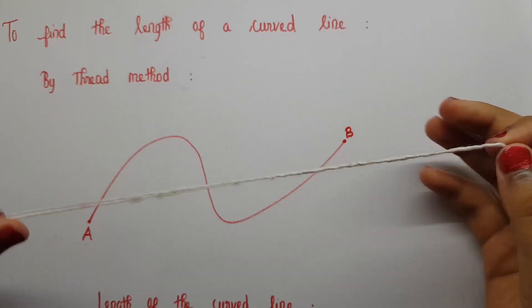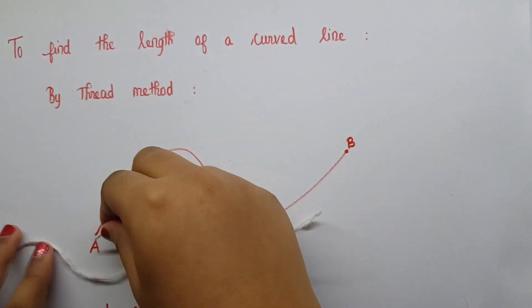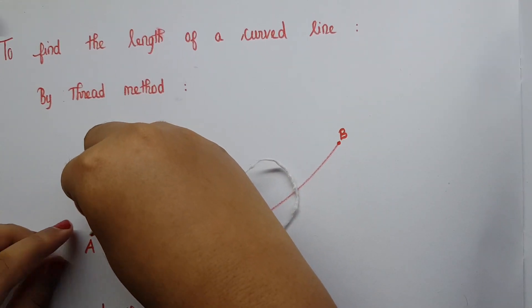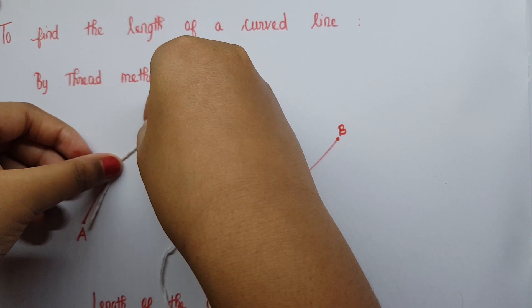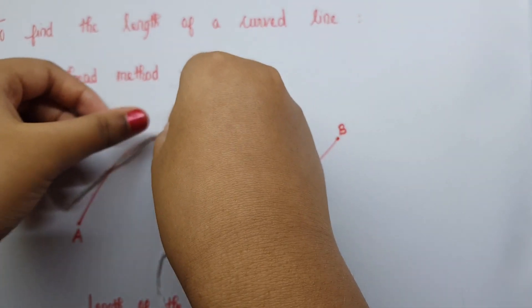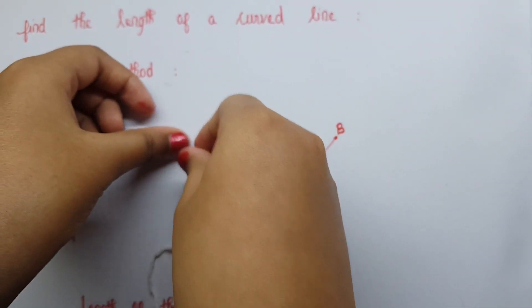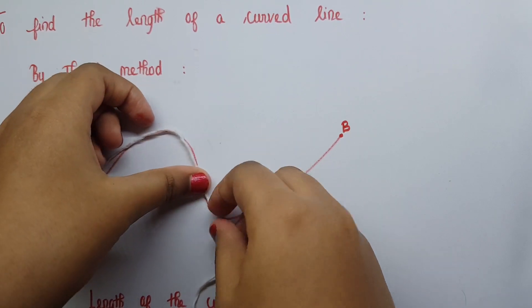Now take a long thread and place it at one of its ends. Press the other end of this traced thread with the finger of the other hand. Keep on tracing the entire length of the curved line with the thread.